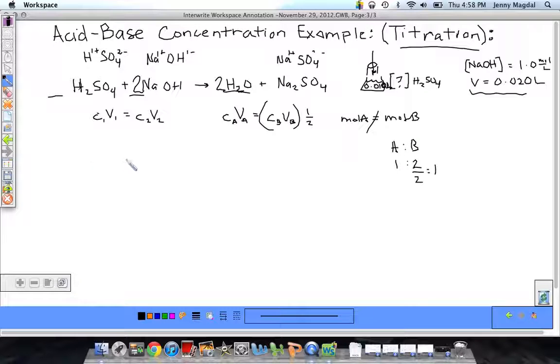So I'm looking for concentration of A. So I can rearrange this by dividing both sides by VA. So CA is equal to CBVB divided by VA. And that whole thing multiplied by 1 half.